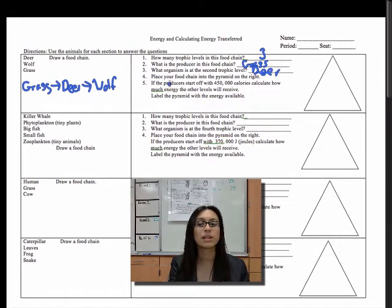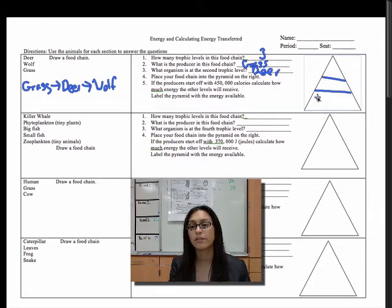Number four says place your food chain into the pyramid to the right. So what you do is, in your pyramid, you're going to divide it into three sections since there's three trophic levels. In the first section goes your producer. Producers always go at the base of the pyramid. Then comes the next trophic level, which are the deer. And finally the third trophic level, which is the wolf.